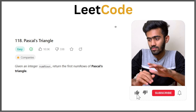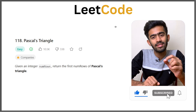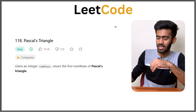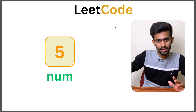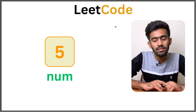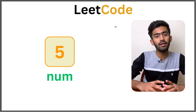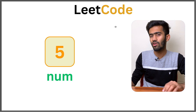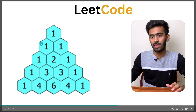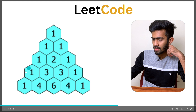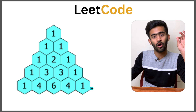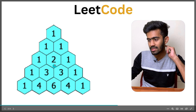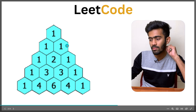Given an integer numRows, return the first number of rows of Pascal's Triangle. So here we have an integer input 5, which means we have to return the first 5 rows of Pascal's Triangle. The first element and the last element of all these rows is 1, and the elements in between is just a summation of the elements in previous rows.